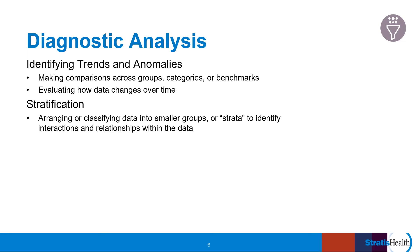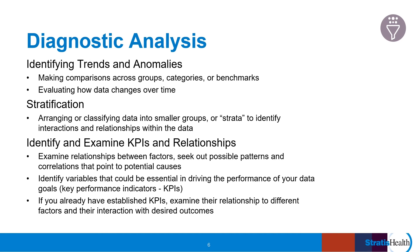Stratification — arranging or classifying data into smaller groups called strata — allows you to identify interactions and relationships within the data. You can also examine possible relationships between factors and find patterns and correlations that point to potential causes. This may allow you to identify variables that are essential in driving the performance of your data goals, called key performance indicators, or KPIs. If you already have established KPIs, you can examine their relationship to different factors and their interaction with desired outcomes.